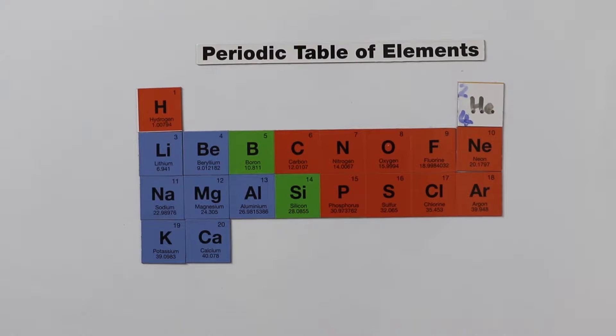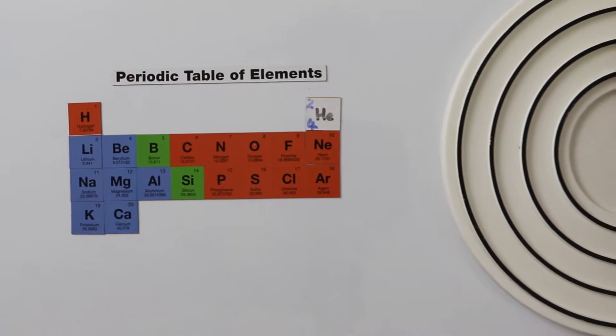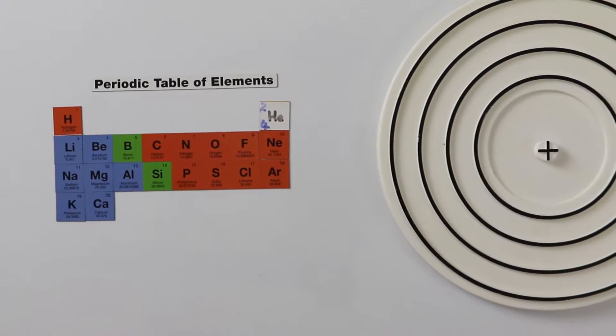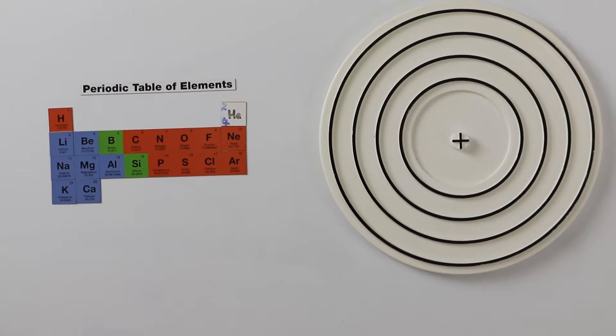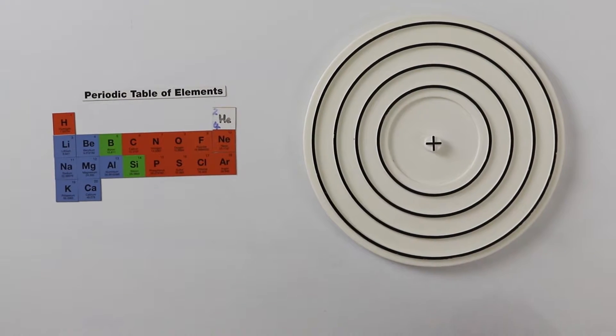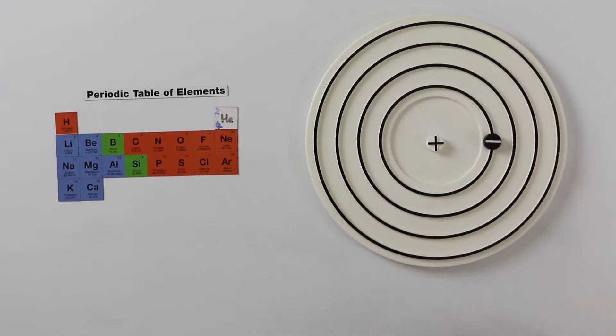They are the nucleus, which, like our sun, is at the centre of the solar system. And we have some electrons that orbit or move around like planets round the sun.